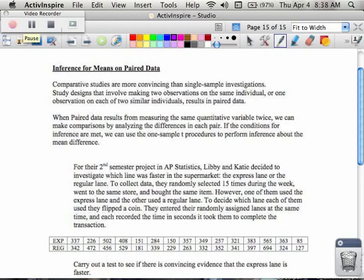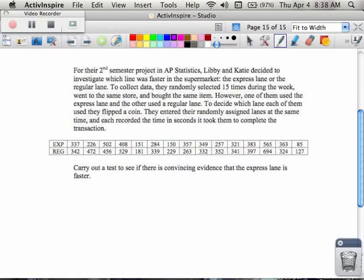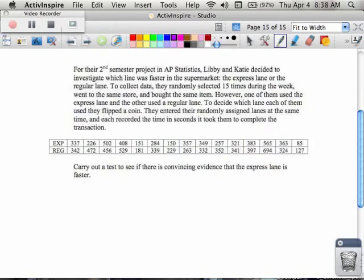Usually comparative studies are talking about differences between two things. So when you look at these paired data results down below, and they're talking about these second semester projects in AP stats, what you'll notice is they talk about two things: an express lane and a regular lane. And what they want to know is, is there a difference between the two?